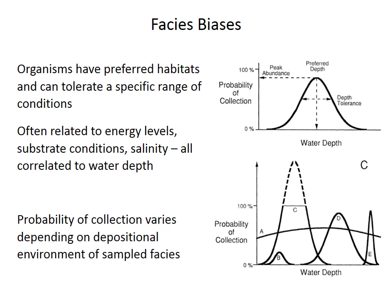In addition, organisms have preferred environmental tolerances and therefore preferred habitats, especially in response to depth-related parameters like substrate and energy levels. This can be visualized schematically as a model where the species has a preferred depth — the peak of the bell curve — as well as a depth tolerance or range, which is the width of the bell curve. The height of the curve represents the abundance of that species.